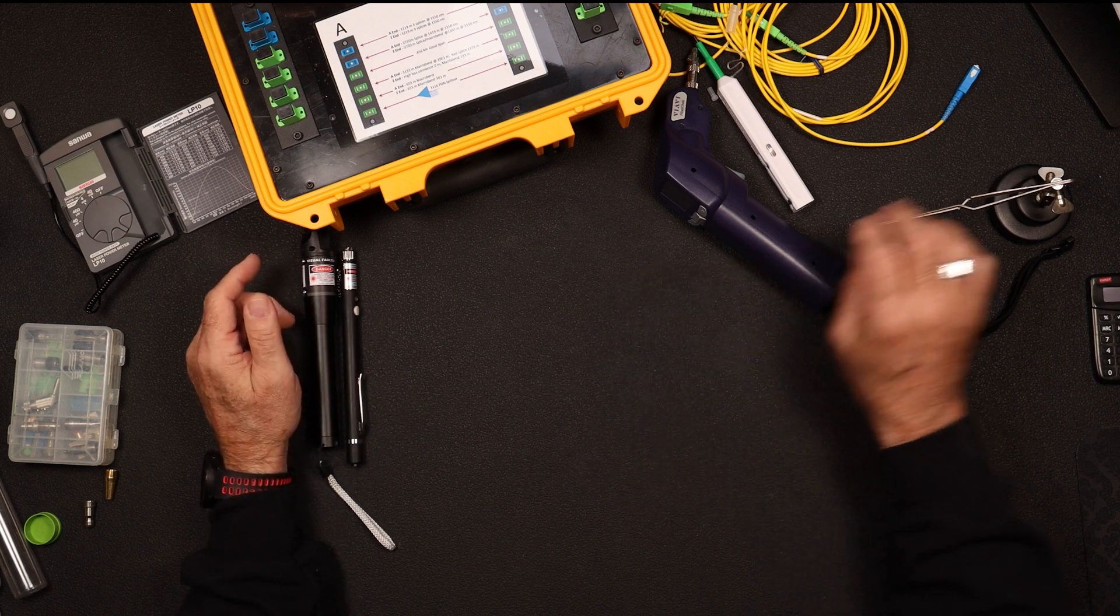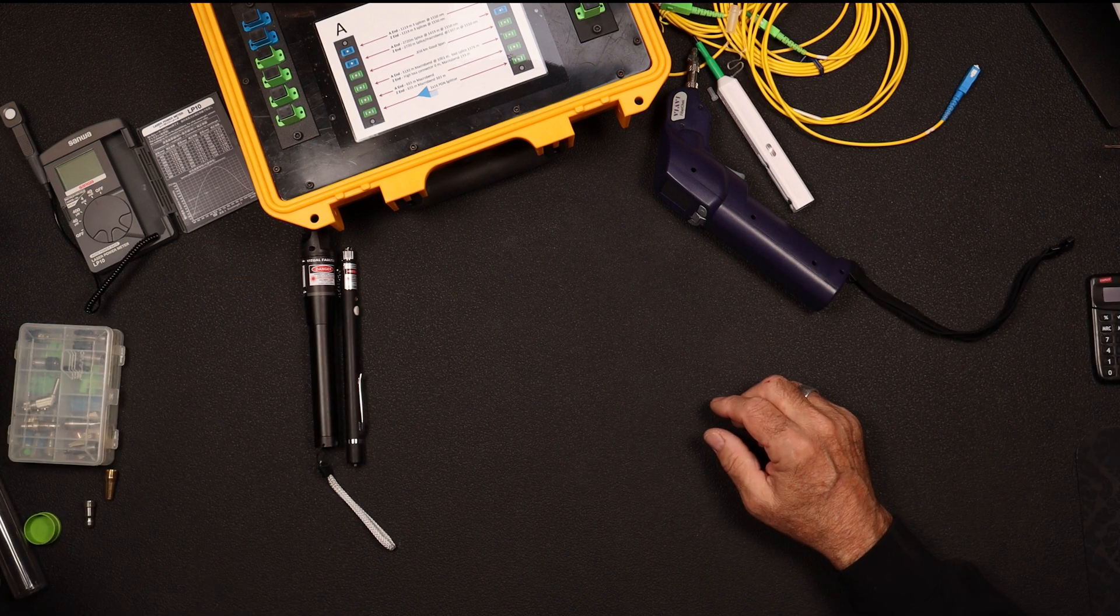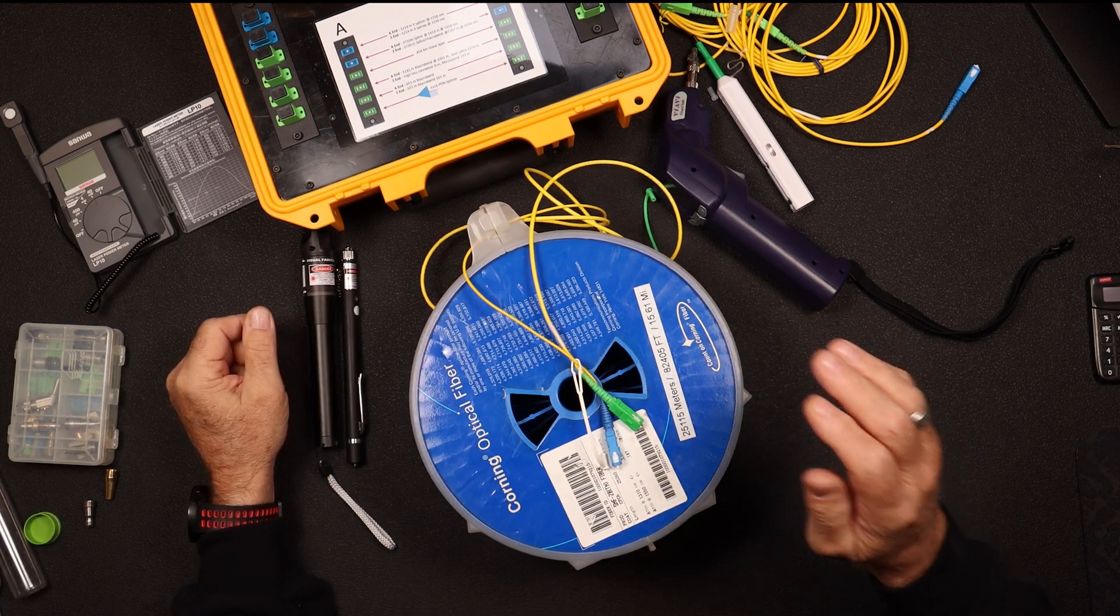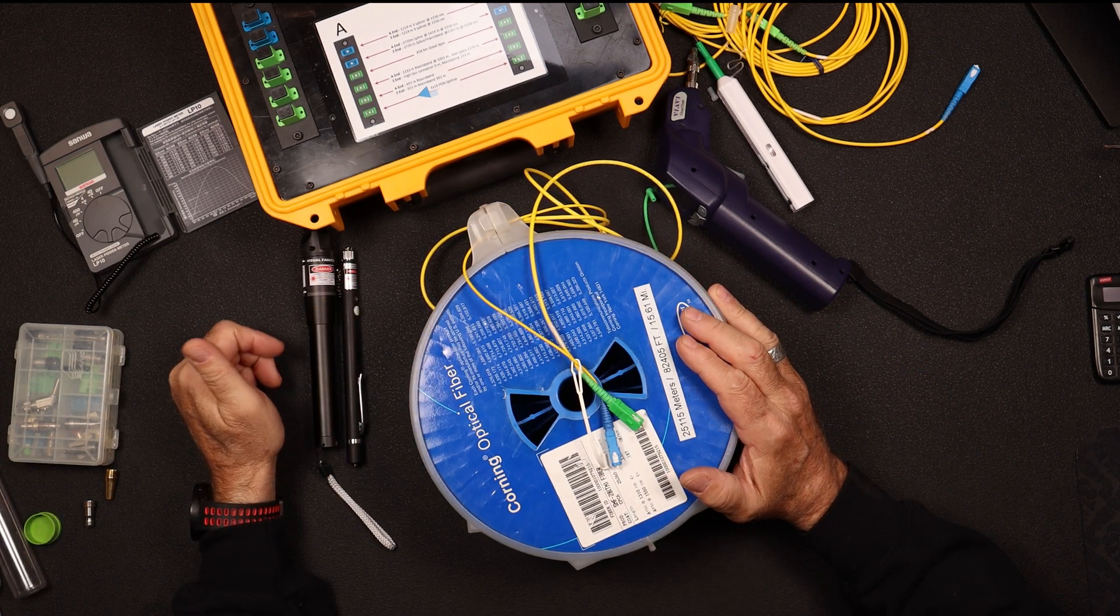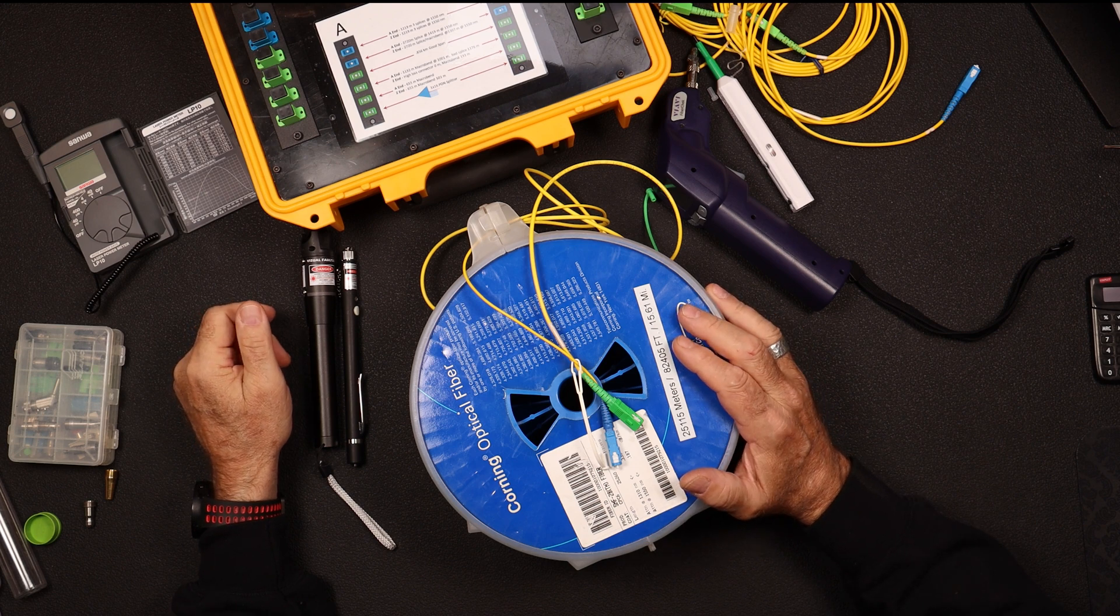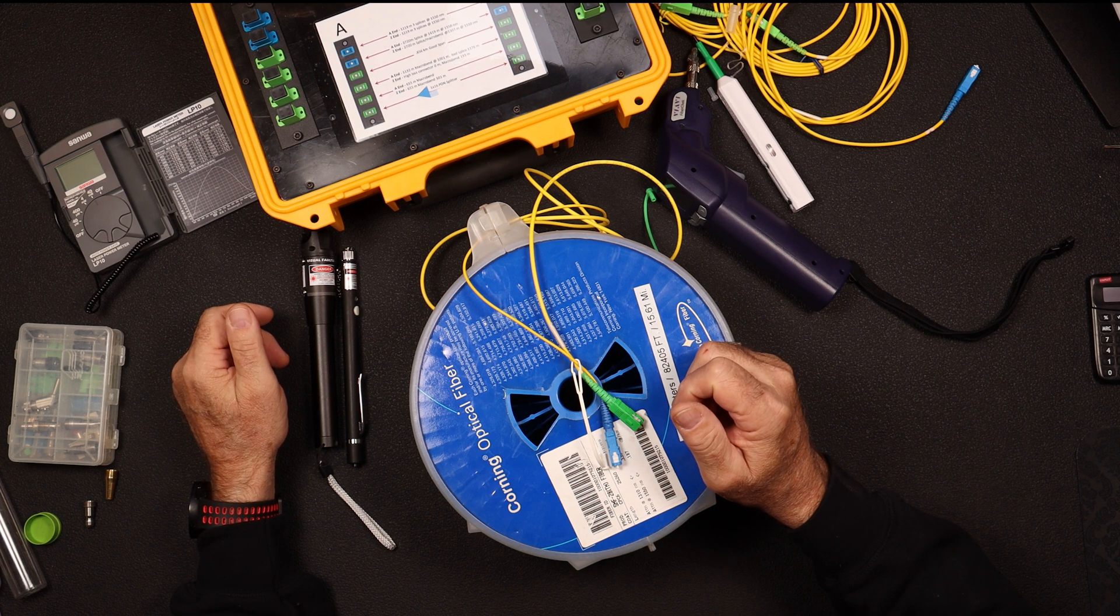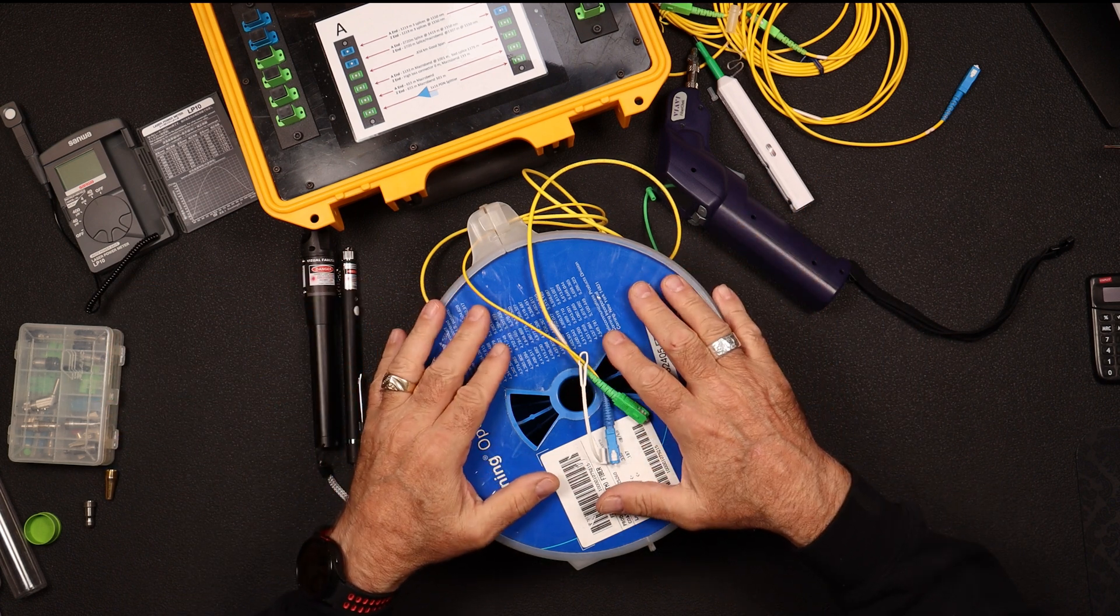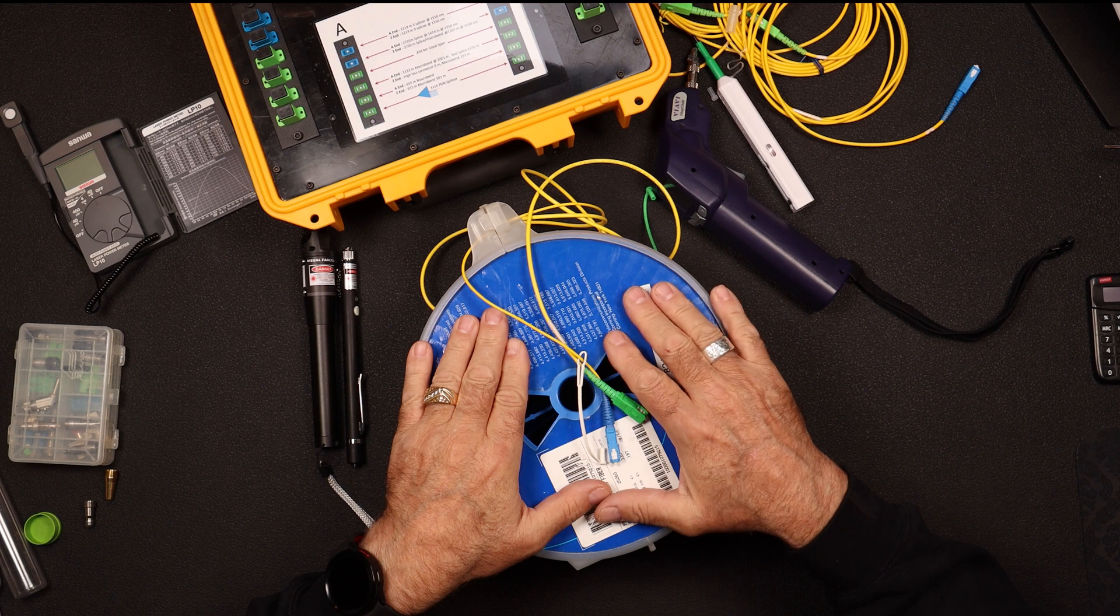But I thought I'd just cut to the chase and actually try to keep this a short video. So what we're going to do is use this. This is a 25.115 kilometer spool of fiber. It's got a couple perfect connectors on it, and there's only two splices in it.